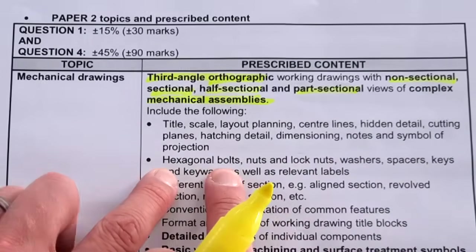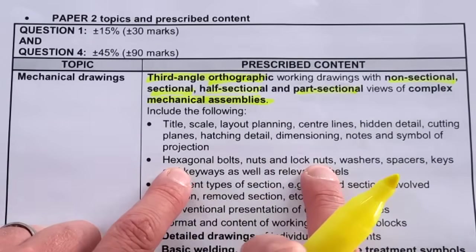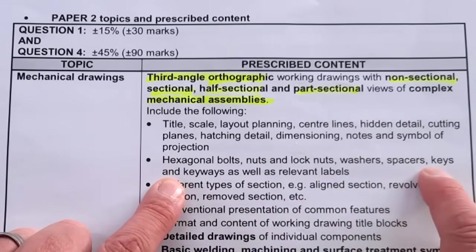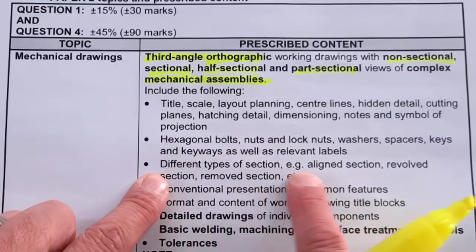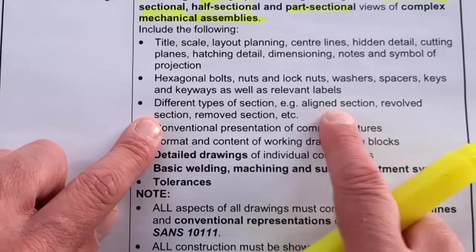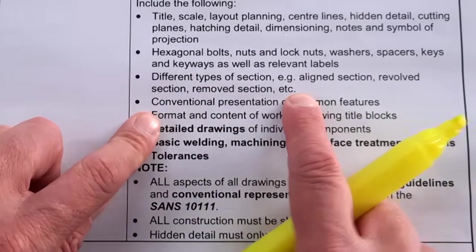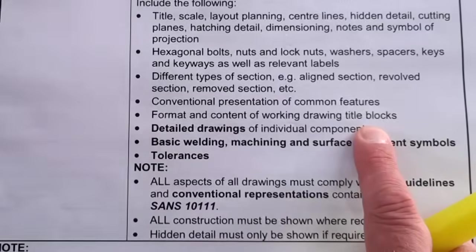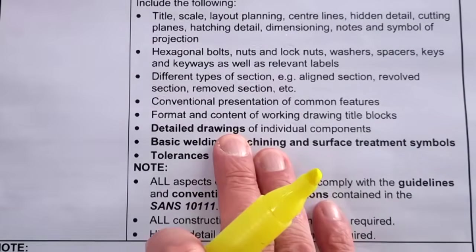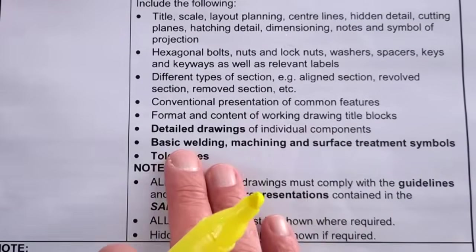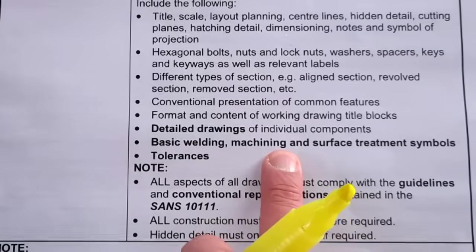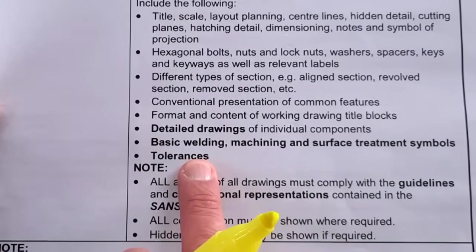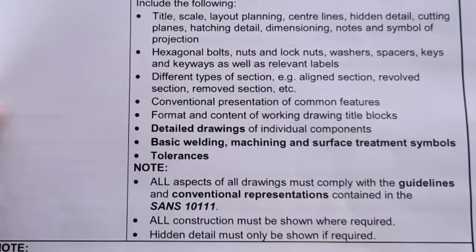Include the following: your title, your scale, layout planning, center lines, hidden detail, cutting planes, hatching, dimensioning, notes, symbols - all of that important. Bolts, construction of bolts and nuts, washers, spacers, all fixtures. Different types of sections - know them: aligned, revolved, removed, etc. Conventional presentation of common features, format and content of working drawings and title blocks, detailed drawings of individual components, basic welding can be asked, machining and surface treatment, as well as tolerances.